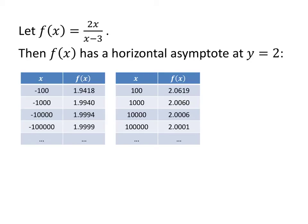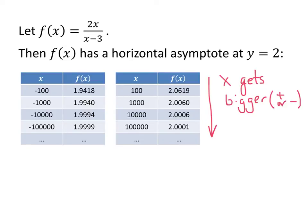Let's go back to our same function, f(x) = 2x divided by (x minus 3). I have two charts. As I go down the first chart, my x values are getting bigger and bigger in the negative direction; in the second chart, they're getting bigger in the positive direction. What I notice is that my y values are getting closer and closer to 2 — a little bit below 2 from one side (1.94, 1.99, 1.999...) and approaching 2 from above as x goes to positive infinity.